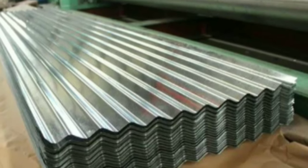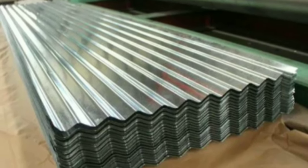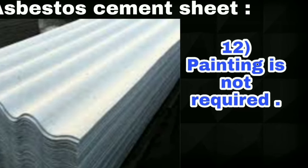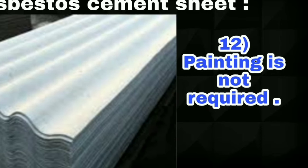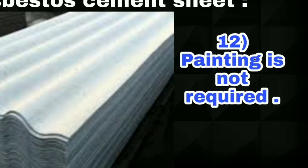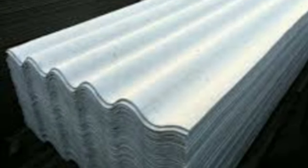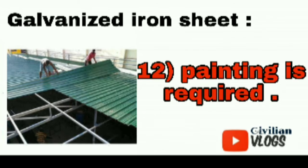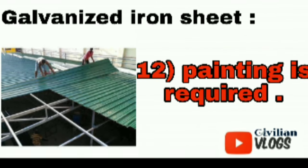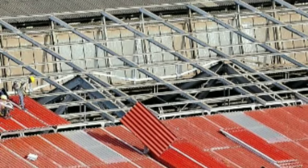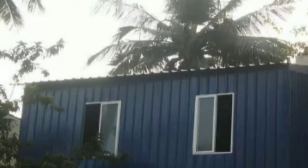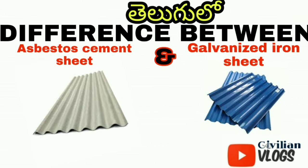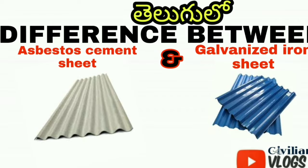This is the last difference. Asbestos cement sheet — painting is not required. But for galvanized iron sheet, painting is required. Because of heavy rains and acid rains, rust is the most important concern. So painting is done to protect against rust, and regular maintenance is needed.